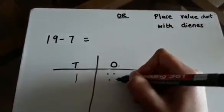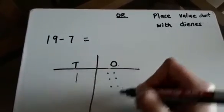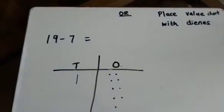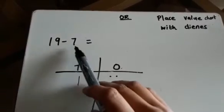1, 2, 3, 4, 5, 6, 7, 8, 9. Now we need to take away 7.